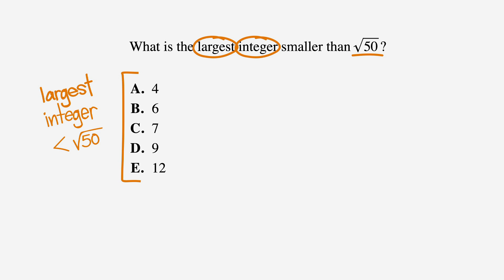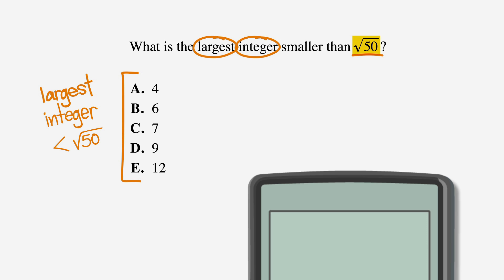Let's go ahead and bring in the calculator. First, we need to find the square root of 50. With the aid of your calculator, we find that it's about 7.07. Write that next to the problem.